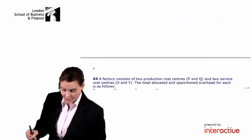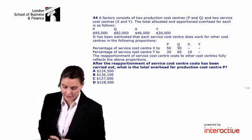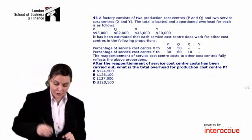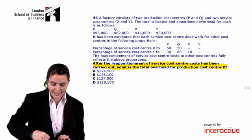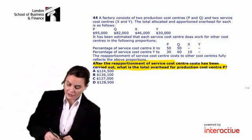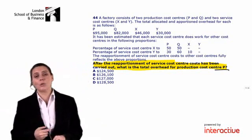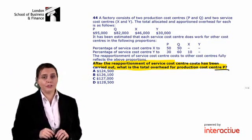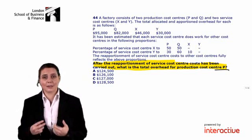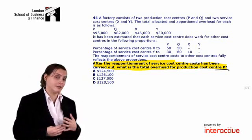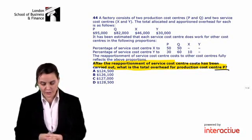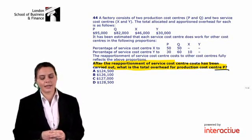Our second question in this area is going to be everyone's favourite step — reapportionment. We're asked: after the reapportionment of service cost centres has been carried out, what is the total overhead for production cost centre P? These reapportionment questions can be quite long, so unless you've practised quite a few and can work through them quickly, this is perhaps one you might skip in the exam and come back to at the end if you have time.